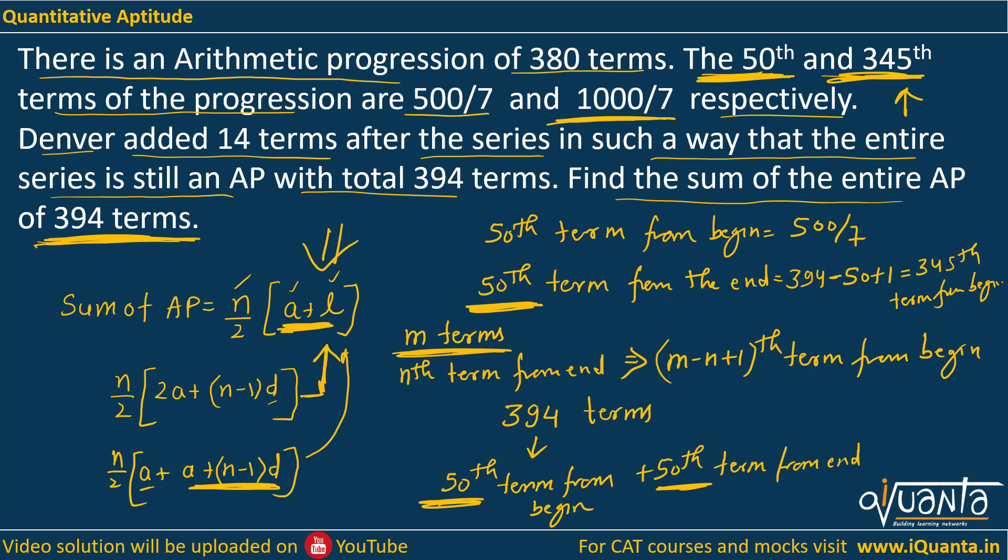And we have been given the value of 345th term from the beginning, it is 1000 by 7. So I can say that the 50th term from beginning it will be 500 by 7. The 50th term from the end will be equal to 1000 by 7, because ultimately we are getting it as the 345th term from the beginning.